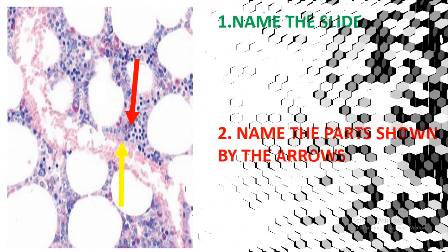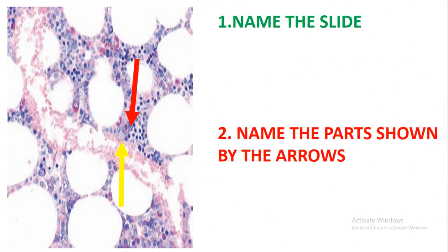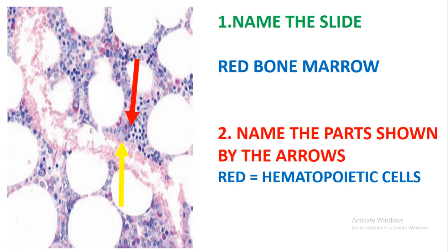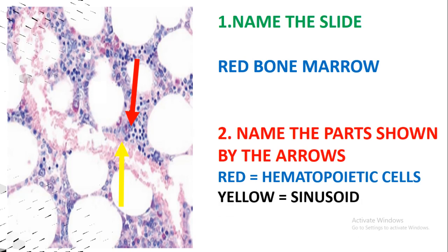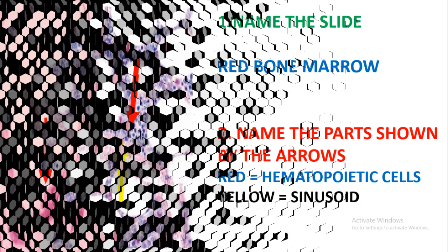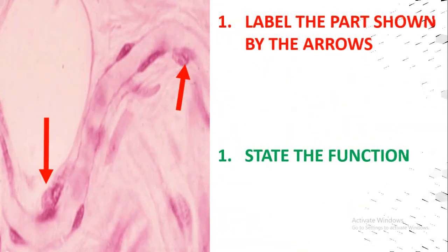In the next slide we have been asked to name this slide. If you look at this slide, it is just the red bone marrow. Name the parts shown by the arrows: the red arrow is showing the hemopoietic cells and the yellow arrow is showing the sinusoid.